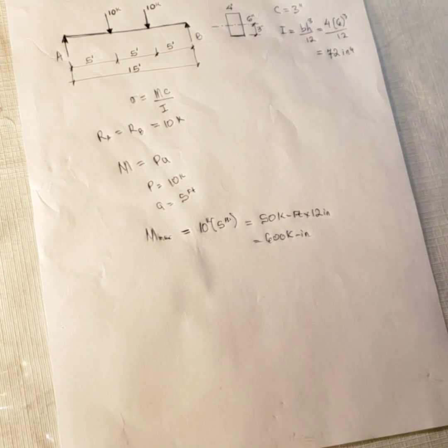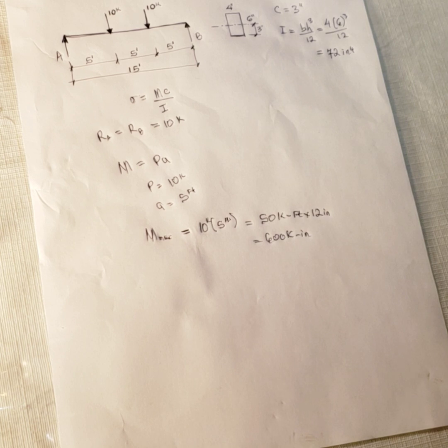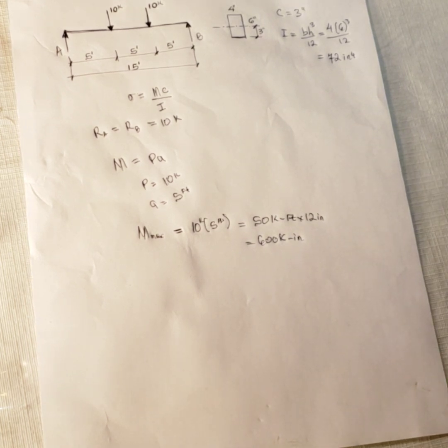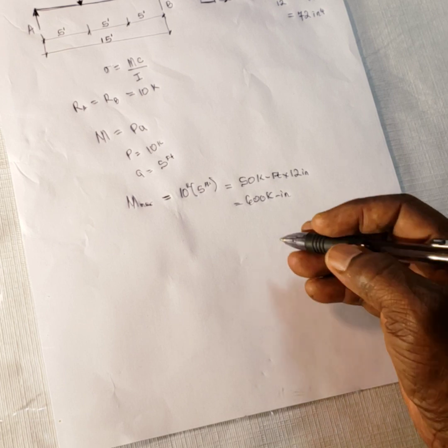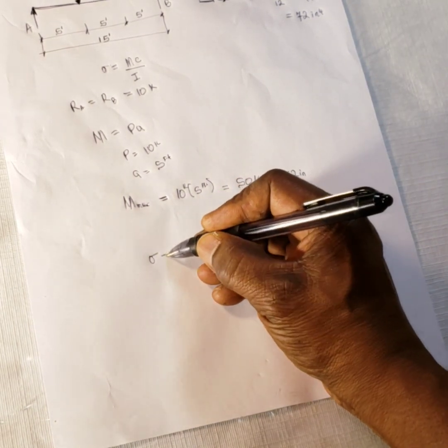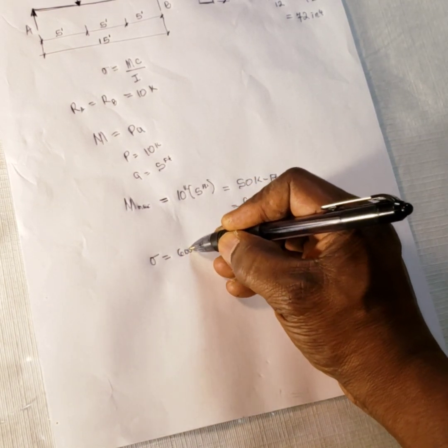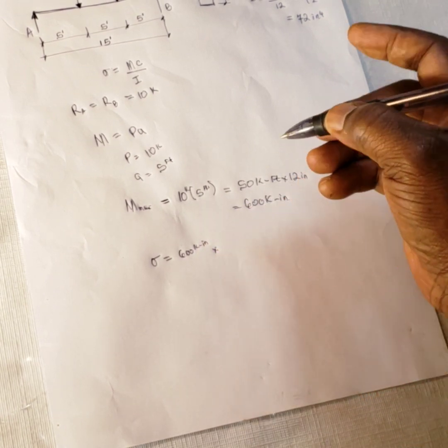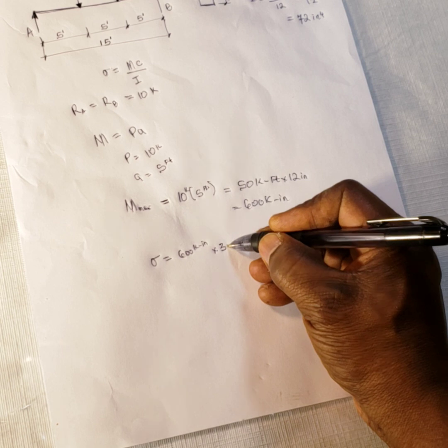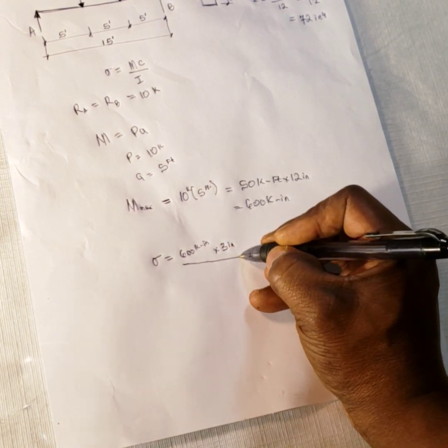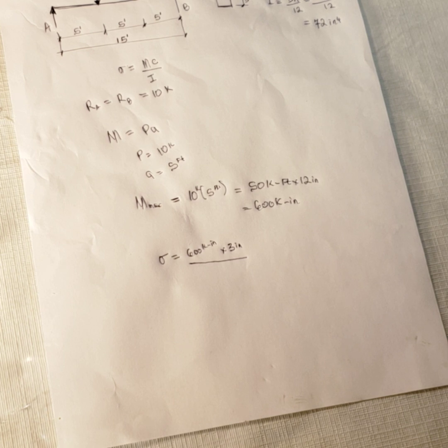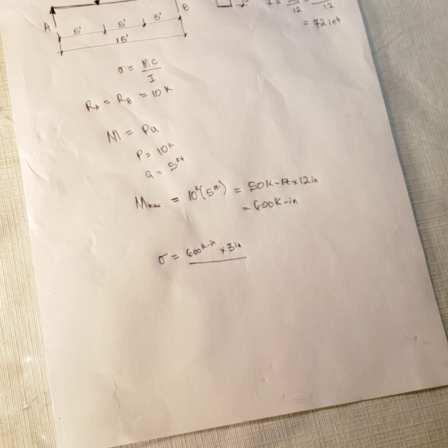So you have all the parameters that you need to solve this problem. We have our maximum moment, the centroid, and the moment of inertia. So we need to substitute that into our equation. The bending stress is equals to the maximum moment in kip inch, which is 600 kip inch multiplied by three inch or centroid. Sometimes you need to include the unit just for you to be aware of what you are doing so that you don't mix up the unit or the unit will not be a factor why you cannot arrive at the correct answer.